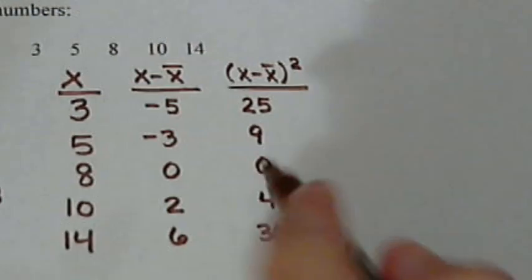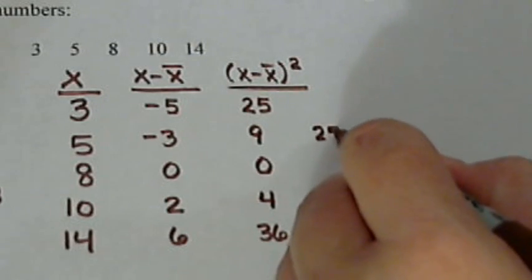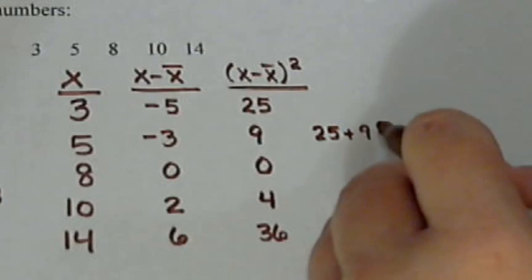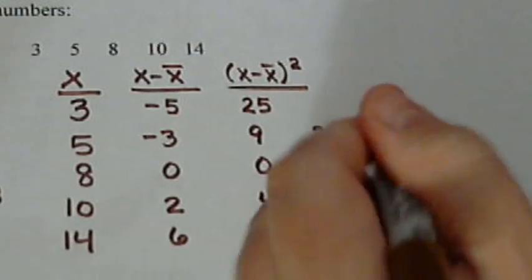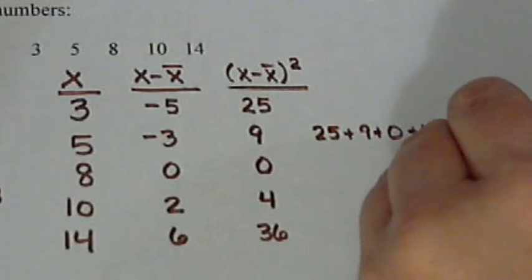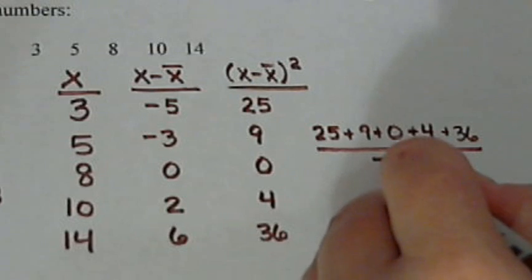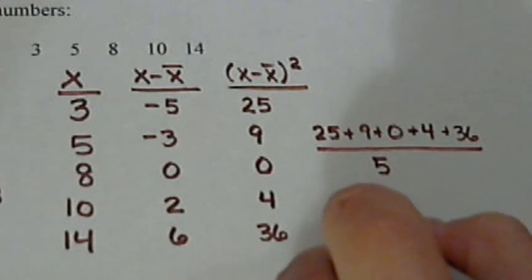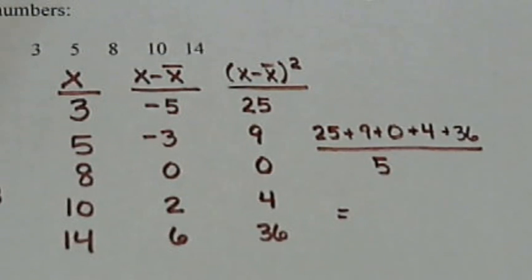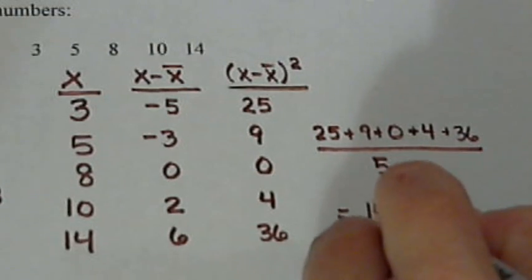Now that we've got these numbers, we're going to find the mean of these five numbers. So, 25 plus 9 plus 0 plus 4 plus 36, all divided by 5. We get 74 divided by 5 gives us 14.8.